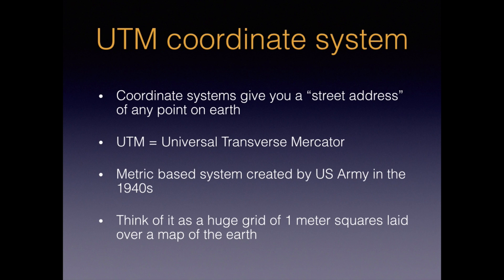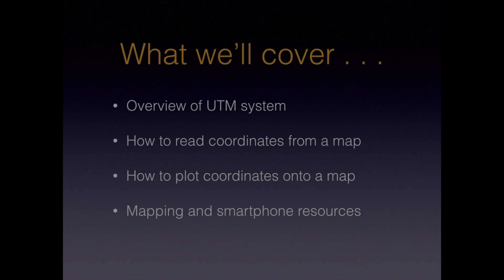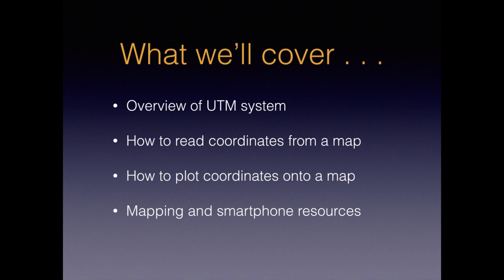Hello, John here with the Columbia River Orienteering Club in Portland, Oregon. Our video today will cover the UTM coordinate system. Coordinate systems are useful because they can specify any location on earth, sort of like a street address. UTM stands for Universal Transverse Mercator, and it's a metric system created by the U.S. Army in the 1940s. A good way to think of it is a huge grid of one meter squares laid over a map of the entire earth. We'll start with an overview of how the system works, then you'll learn how to read coordinates from a map, how to plot coordinates onto a map, and we'll finish with a few good mapping and smartphone resources.